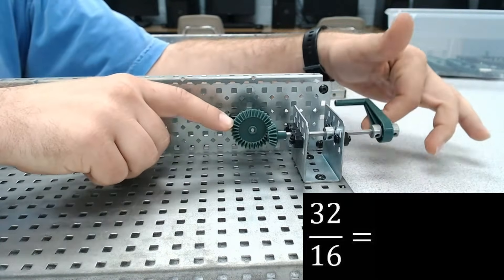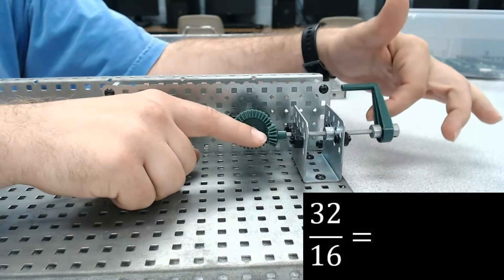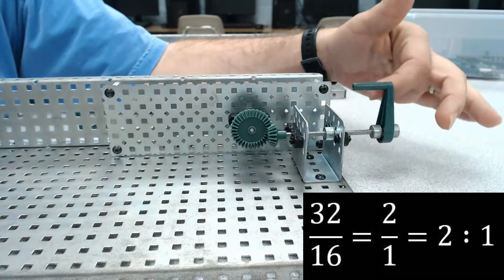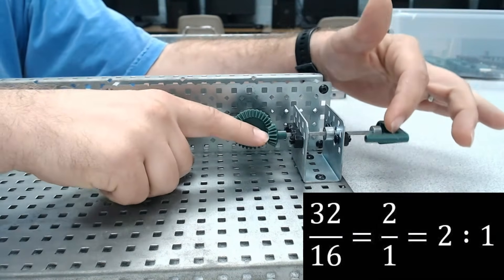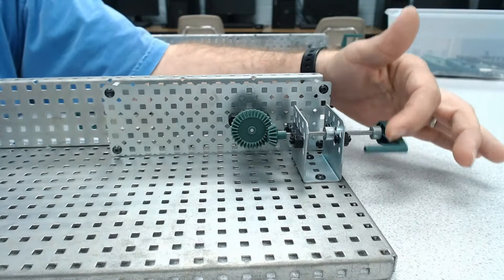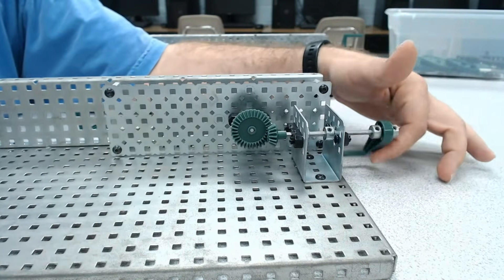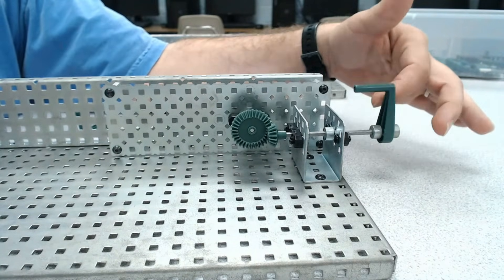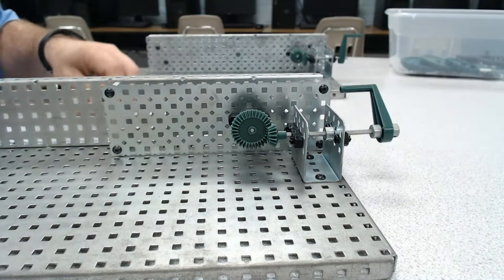Well, 32 on our output, so 32 divided by 16 means we have a 2:1 gear ratio. In other words, it would take two turns of our input to get one turn out of our output. That means this system is actually geared for torque instead of for speed.